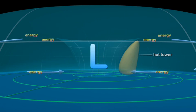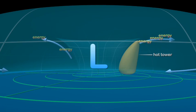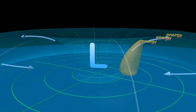Hot towers act like express elevators, accelerating the movement of energy into high-altitude clouds. This energy boost tends to strengthen the hurricane.